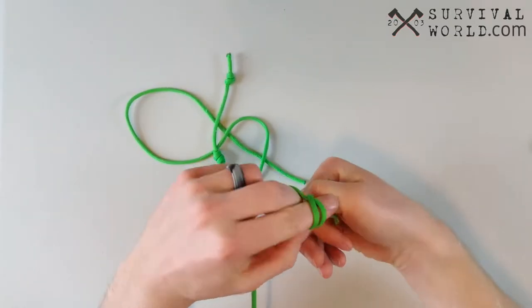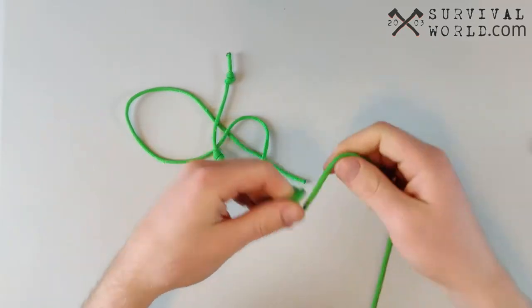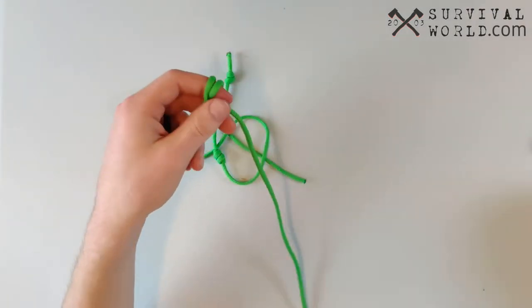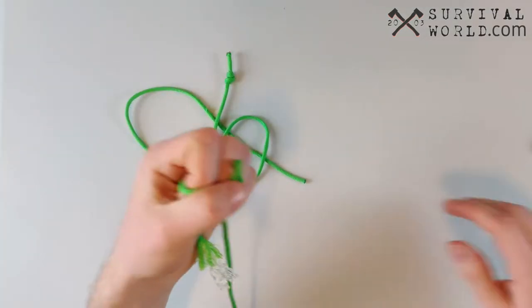And lots of rock climbers use it as well, on the backup at the end of their lines in case a belayer accidentally lets go of the rope so it'll just get stuck in the hook and they won't fall to their death. So let's dive into how to actually tie this knot.